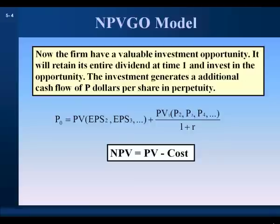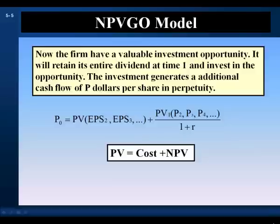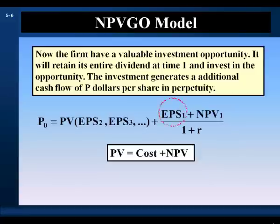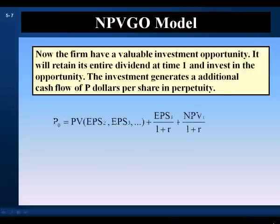Net present value is present value minus cost. Let's solve the net present value equation for the project's present value. We get that present value is equal to cost plus net present value. Let's substitute this expression for present value for the time one present value of the project. The earnings per share at time one is the cost of the project, to which we add the net present value of the project at time one. Rearrange the equation to separate the present value of the cost of the project and the net present value of the project.